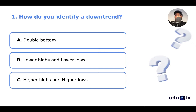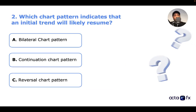To know the correct answers to these questions, you'll have to stick with me for part two, where I'll review the right answers and explain them. Second question: which chart pattern indicates that an initial trend will likely resume? A: bilateral chart pattern. B: continuation chart pattern. C: reversal chart pattern. If you know the answer, type it in the comments.